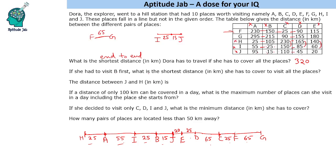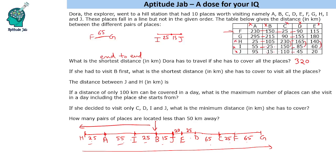If she had to visit B first, what is the shortest distance she has to cover to visit all the places? She starts from B, goes all the way one direction and then back the other way, covering this extra distance. Just add 55 plus 50, which is 105, plus 320. So 425 will be the shortest distance.